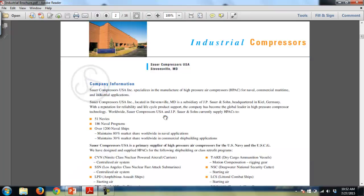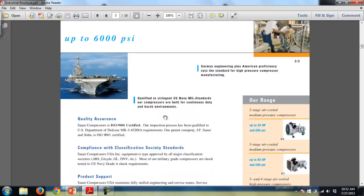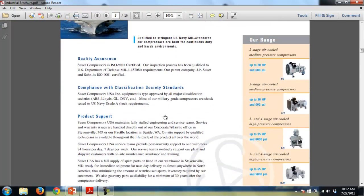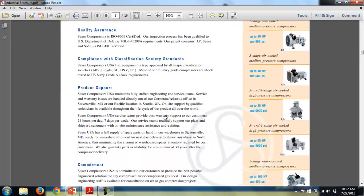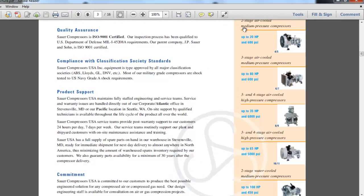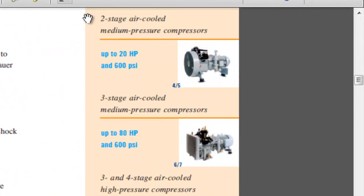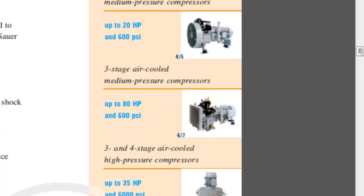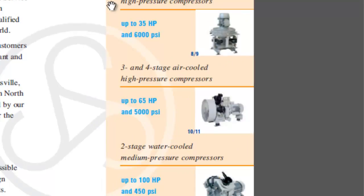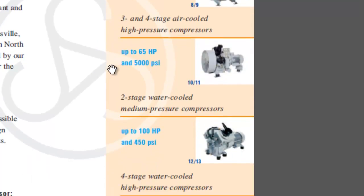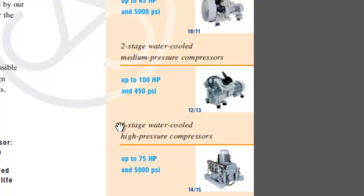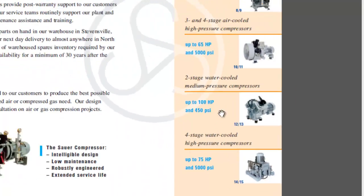And if you were to kind of just browse through their brochure here, you see their range of compressors that they have. Over here on the right, they have a two-stage air-cooled up to 600 psi, three-stage also up to 600 psi. If you want to go up to 6,000 psi, they're going to be required in three- and four-stage compressors. And in fact, if you go to really high pressures, you can end up doing water-cooled as well.